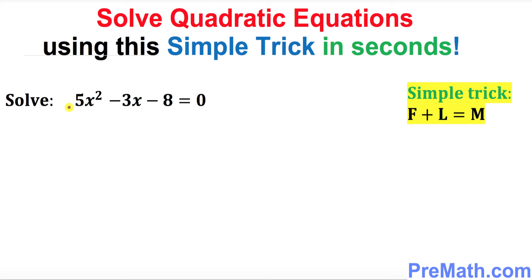Let's look at the very first example. This is a quadratic equation and we want to solve it using this simple trick. This trick simply tells you that if you add the first and the last two numbers, which is 5 and negative 8, they must equal negative 3, and that is of course in our case.